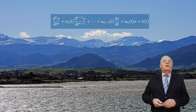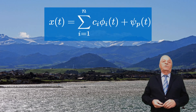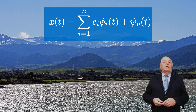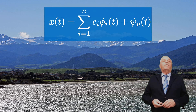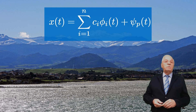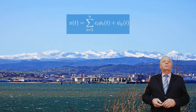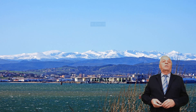The general solution to this problem is of the form given in this equation, where C1, C2, and Cn are arbitrary constants. The set of functions phi1, phi2, ..., phin is a fundamental system of solutions for the corresponding homogeneous equation, and Cp is a particular solution to this problem.